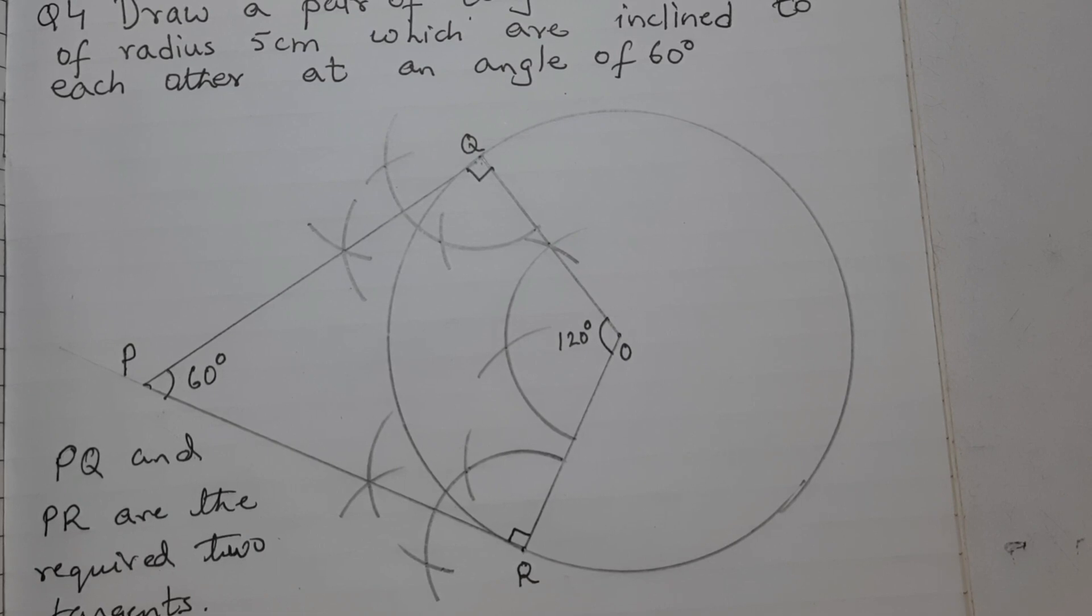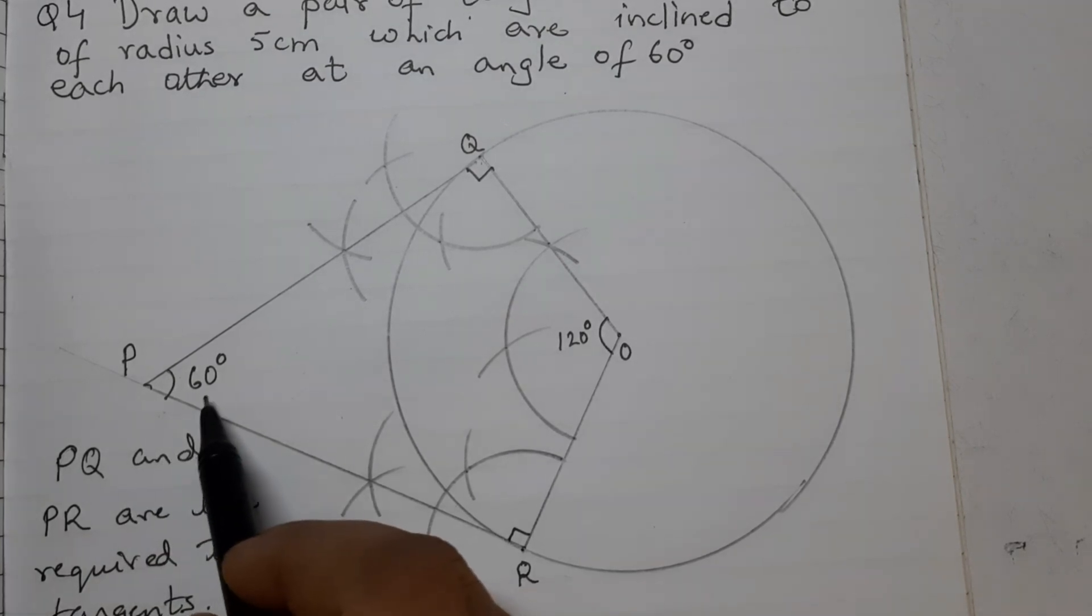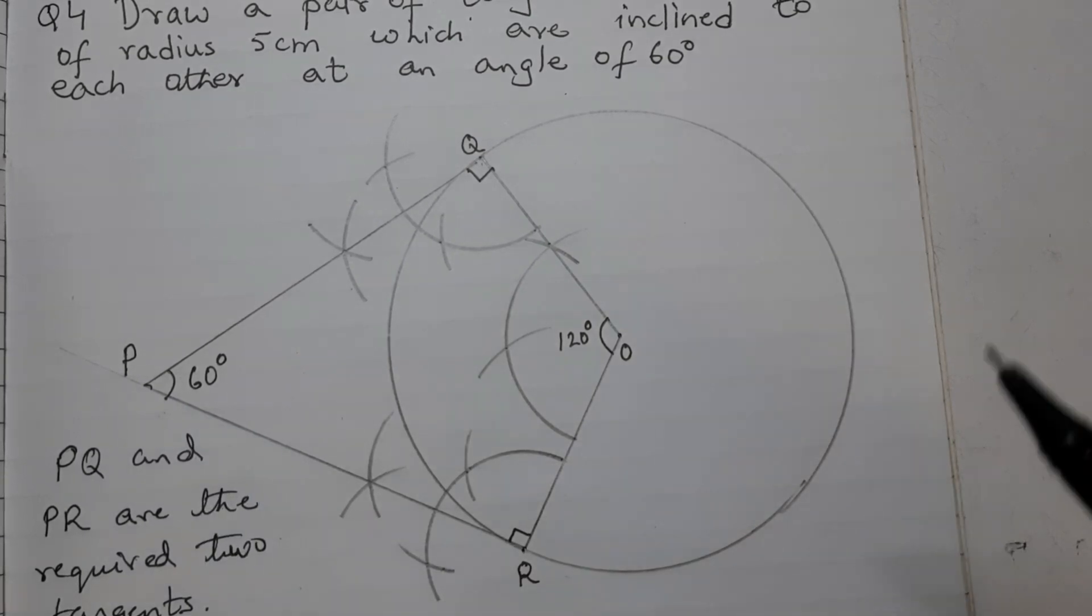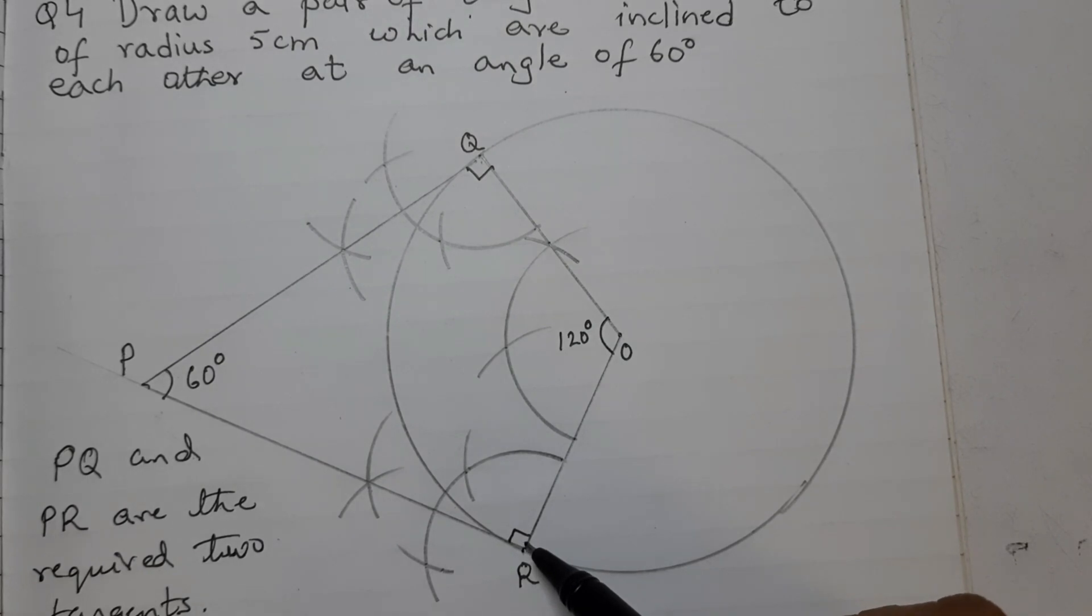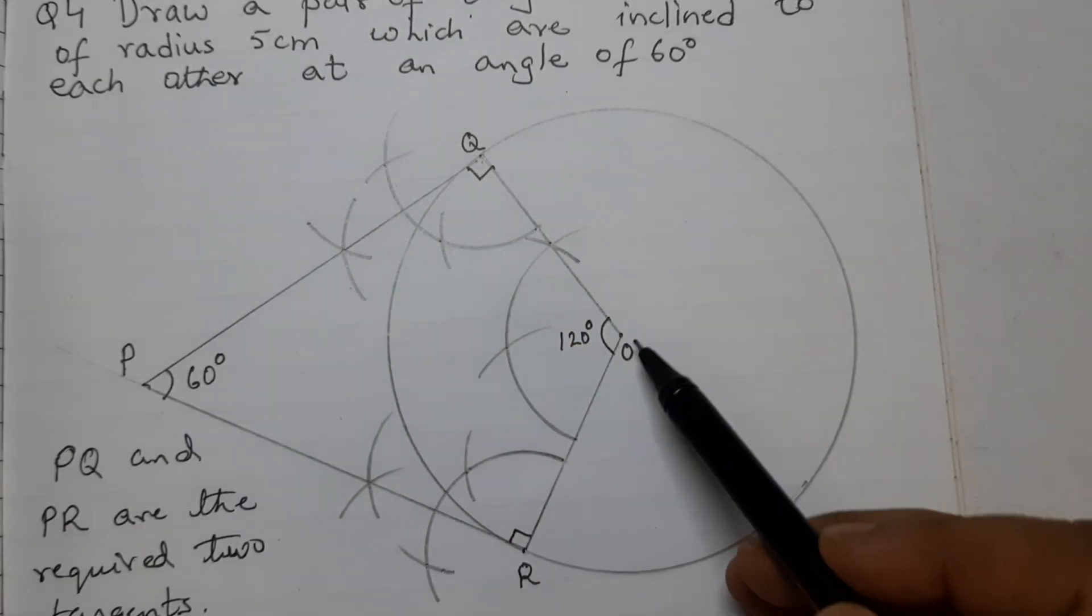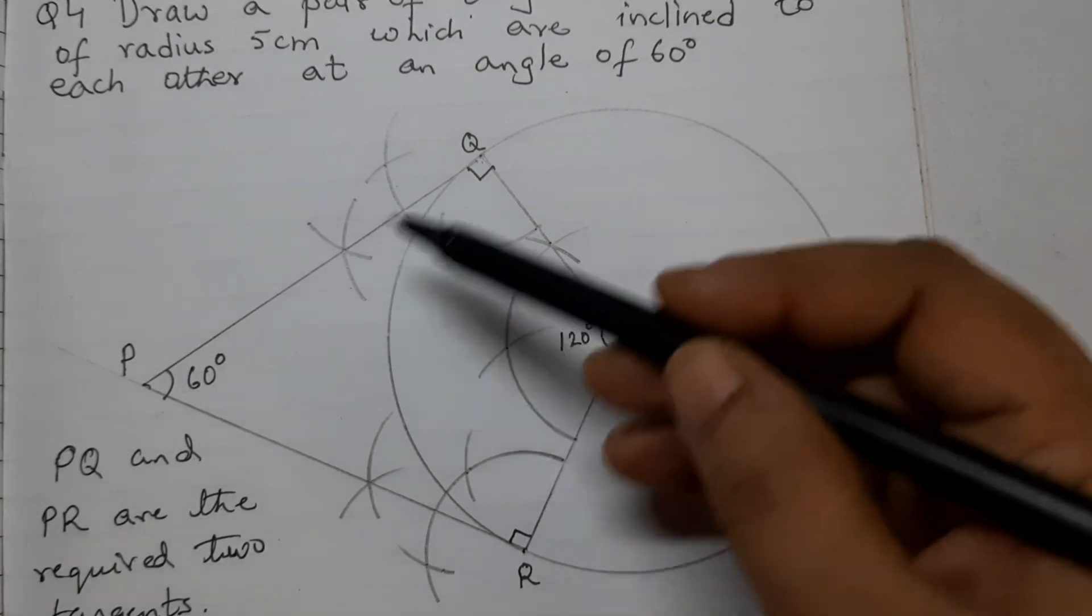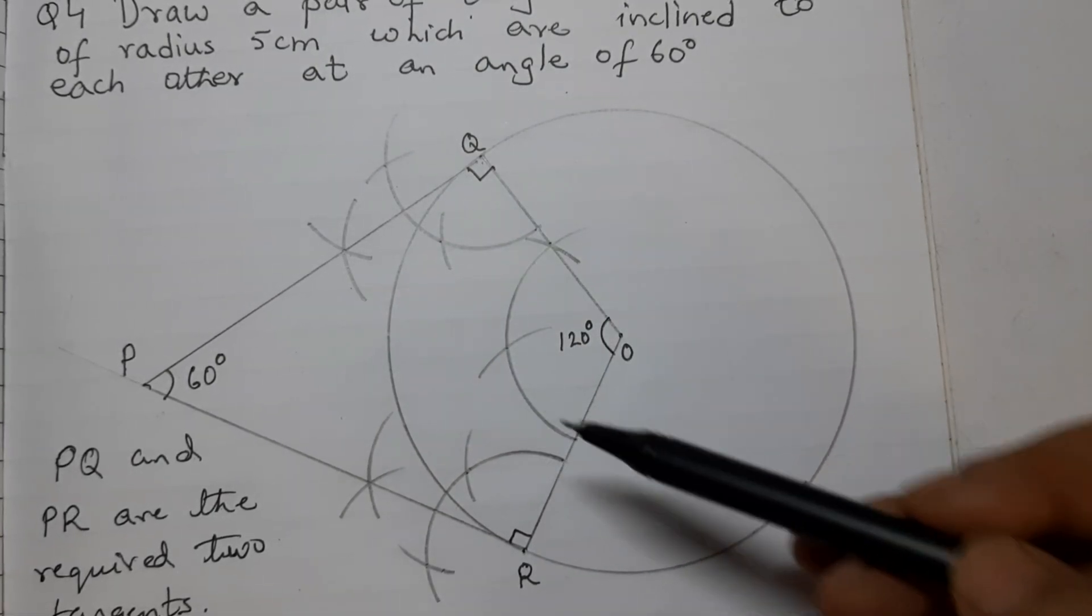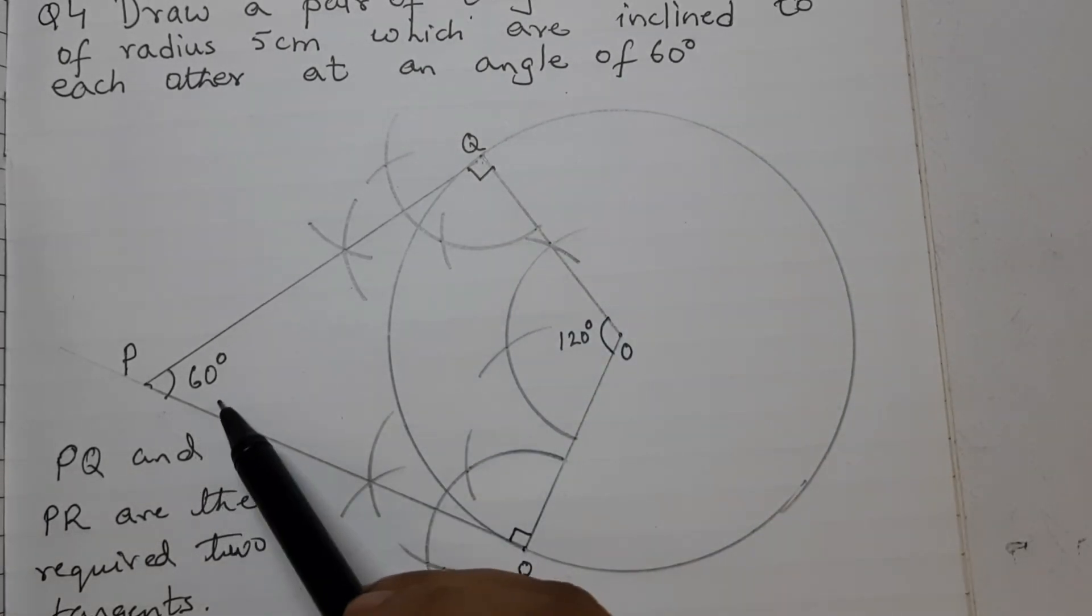Now we need to write the justification. That is, we need to prove that the two tangents are making an angle of 60 degrees because nobody is going to measure and see. They will see the justification. The measurement is done only for us to check. So for justification, what we can do is by construction, this is 120 degrees, this is 90 degrees, this is 90 degrees, and P, Q, O, R is a quadrilateral. So we know that the sum of all the interior angles of a quadrilateral is 360 degrees. So we have got the three angles. We can easily find out this angle.